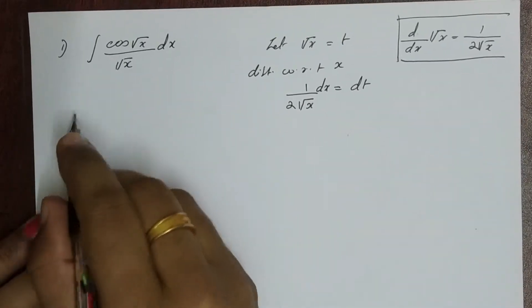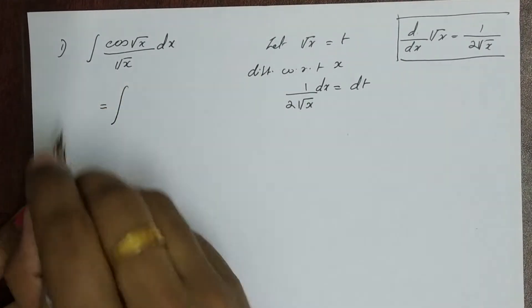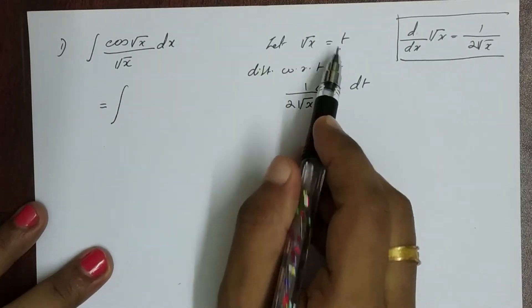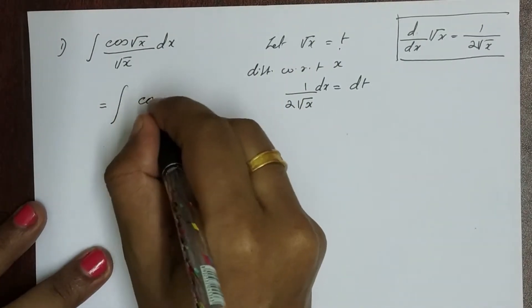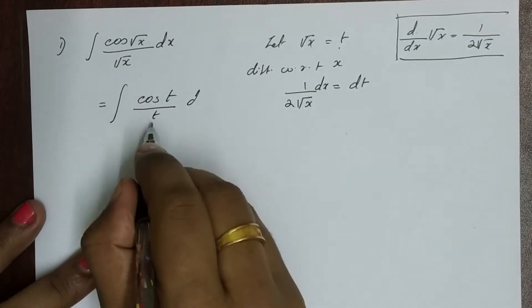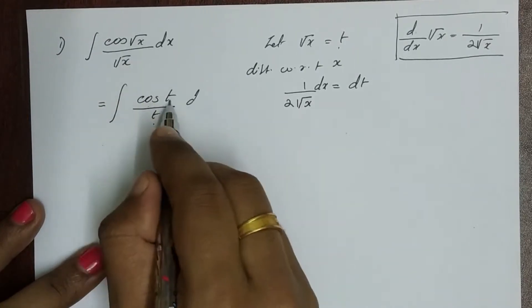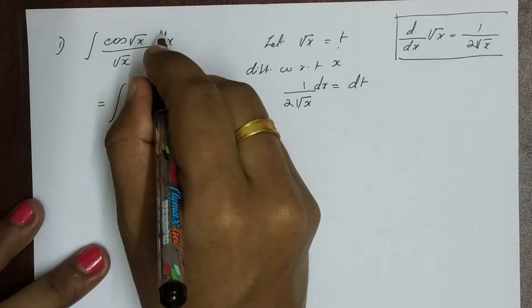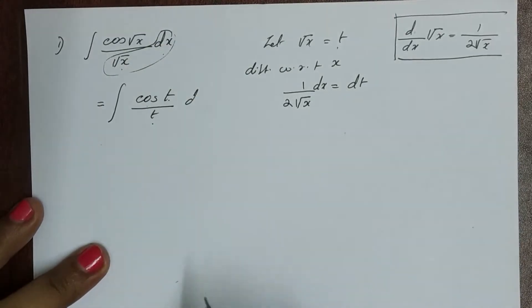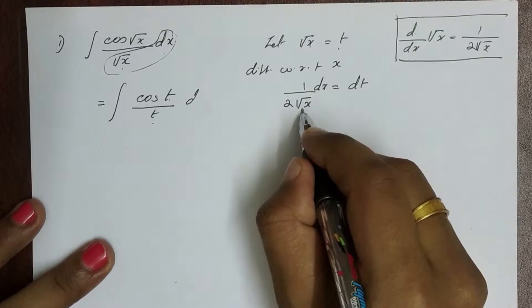Let us substitute here. The integral becomes cos(t), since √x equals t. What remains is dx divided by √x.